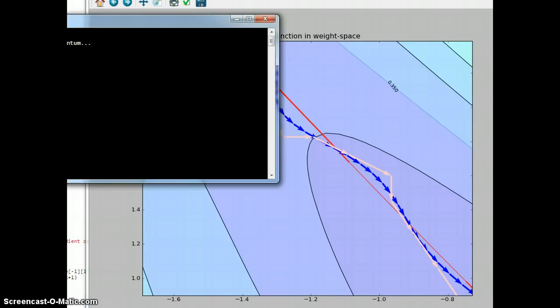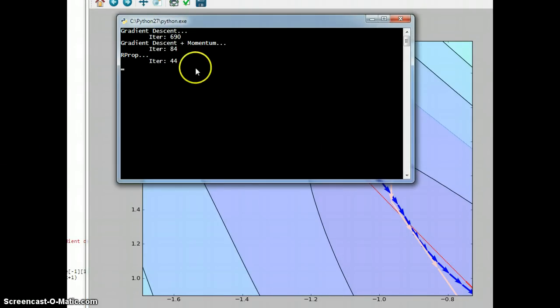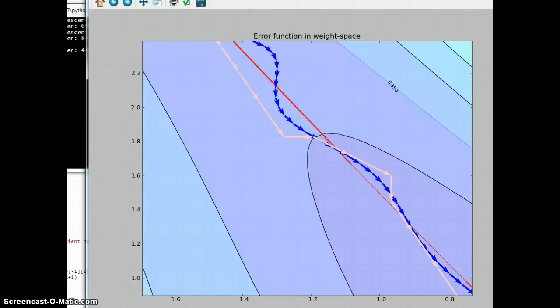Now as far as the numbers, check that out. Plain gradient descent, 690 steps. Momentum, classical momentum, 84 steps. RProp, 44 steps. So it's twice as good as momentum, which was almost a factor of 10 better than just plain gradient descent. So that's a pretty huge improvement.